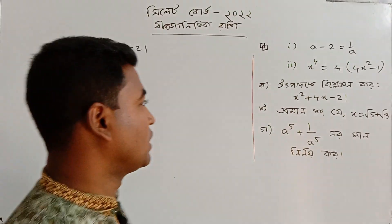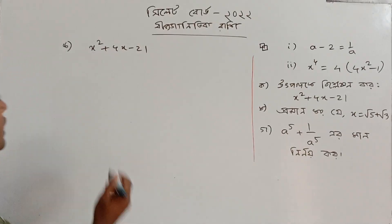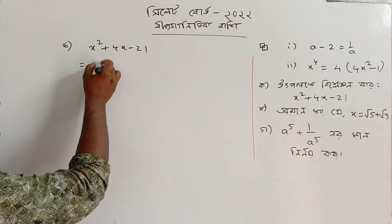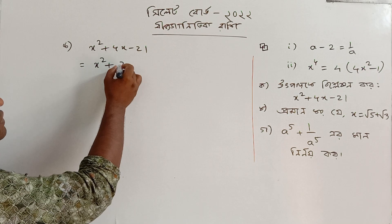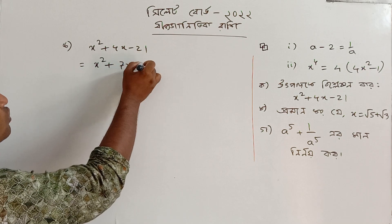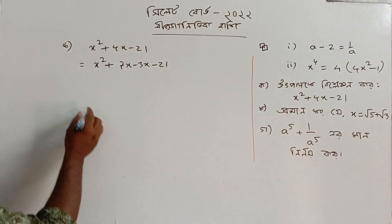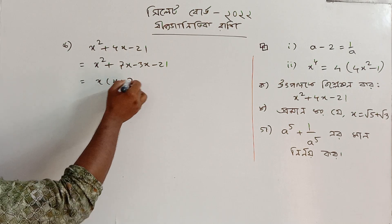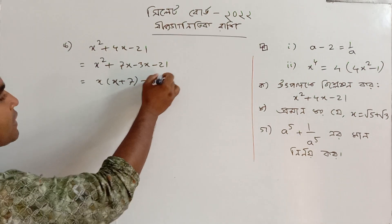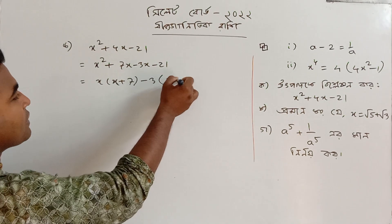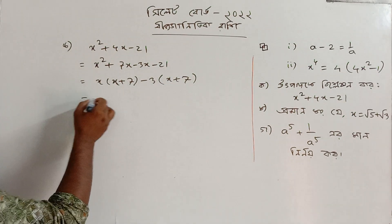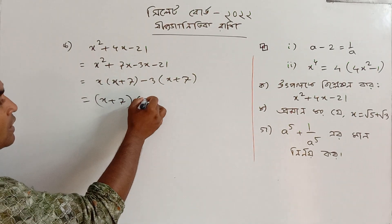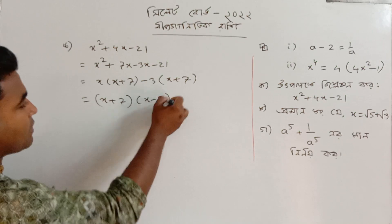It is important to understand how the process works here. The numbers are 3 and 1. Let's see the middle term. For x, we have x plus 7; for minus 3, we have x plus 7. That means the common factor is x plus 7, giving us x plus 7 times x minus 3.